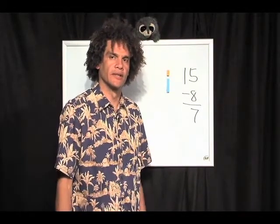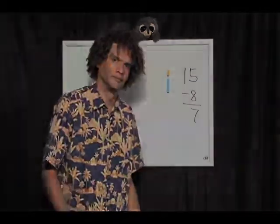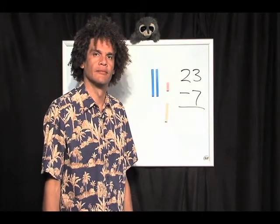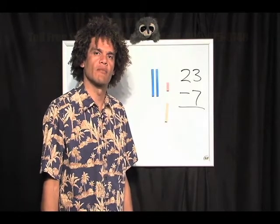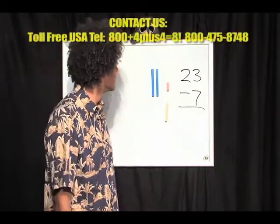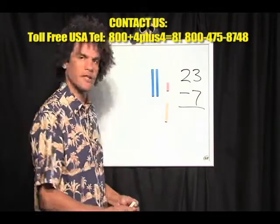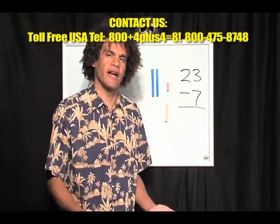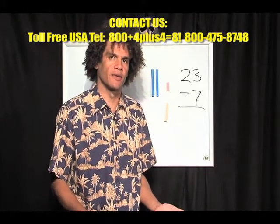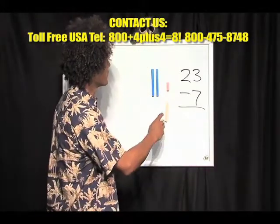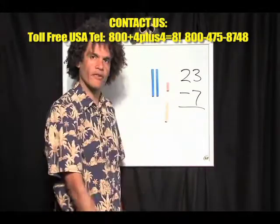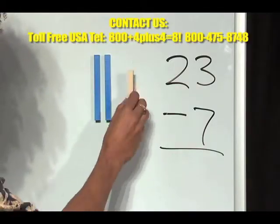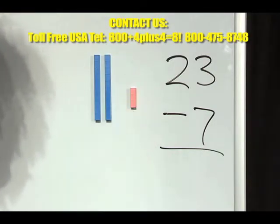We're going to do a couple more problems quickly. A slightly more complex subtraction problem: 23 take away 7. All I'm going to do is add, because you'd much rather add small numbers than subtract. Do I have enough? I don't have enough. I can't take this 7 out of that 3.